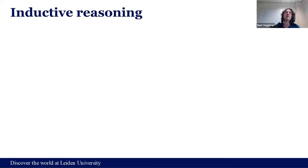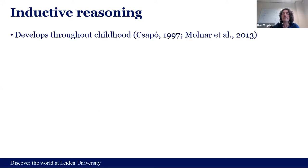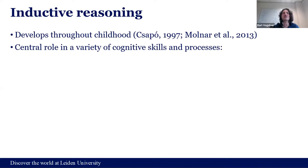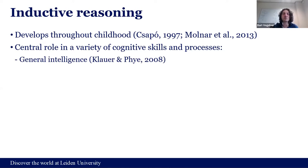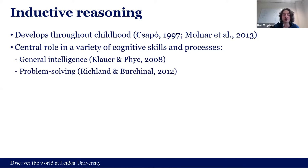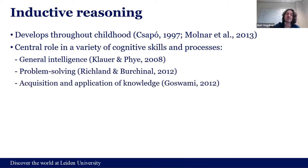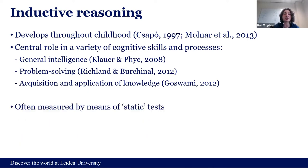When we dynamically test a person — very often a child — we do that within the domain of inductive reasoning. Analogical reasoning is a subtype of inductive reasoning. Why do we use inductive reasoning and specifically analogical reasoning in dynamic tests? Because they play such a central role in so many cognitive skills and processes, among which general intelligence, but also problem solving, everyday learning, transfer, application of knowledge, and generalization.